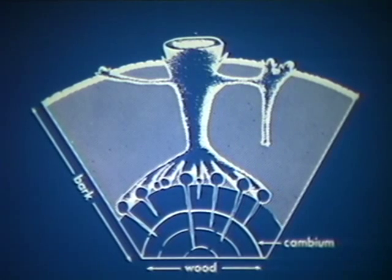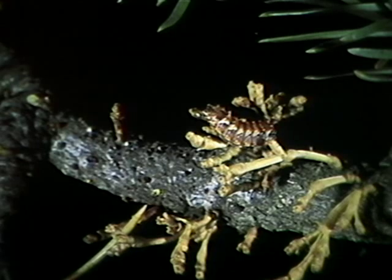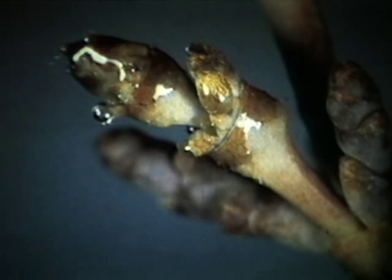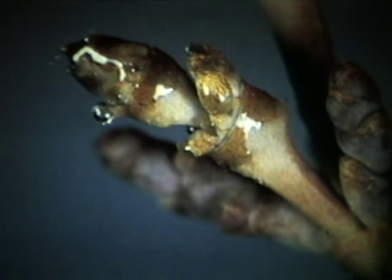Dwarf mistletoe has an inner root system by which it absorbs and transfers food substances obtained from the host tree. Its outer reproductive system is made up of slender, leafless aerial shoots. Dwarf mistletoe has both male and female plants. Flowers of the male have petal-like parts which open, exposing pollen sacks, while the female flowers remain closed. Both types of flowers produce nectar, which attracts insects.